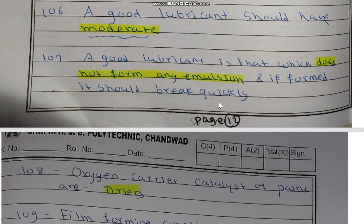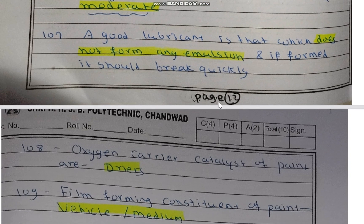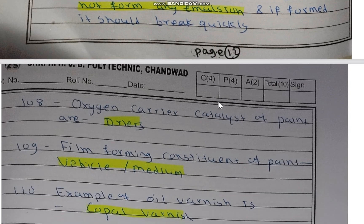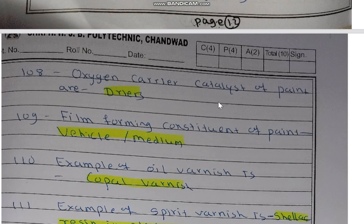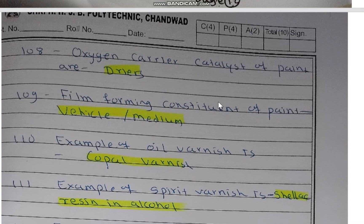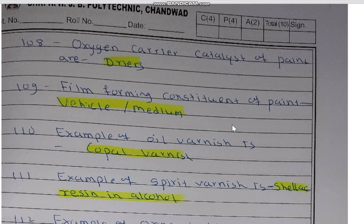The oxygen carrier catalyst of paint is known as dryers. The film-forming constituent of paint is the vehicle or medium — oil or water — which is used as the vehicle or medium in paint.